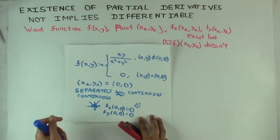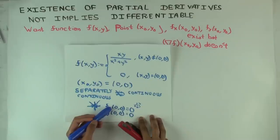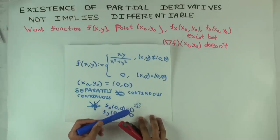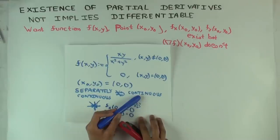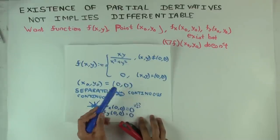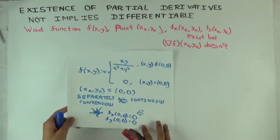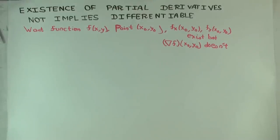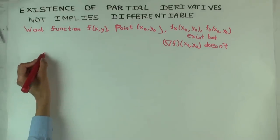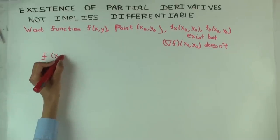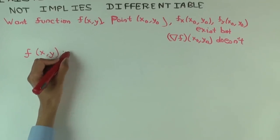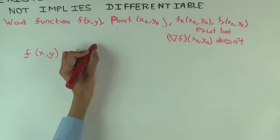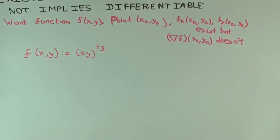However, it's not differentiable at the origin. Why? It's not continuous to begin with, and if something is differentiable it should be continuous. So this gives an example illustrating that. But now I want to take another slightly different example — somewhat different flavored, with its pluses and minuses.